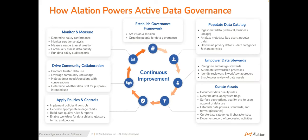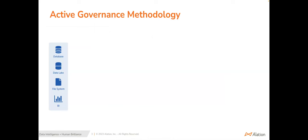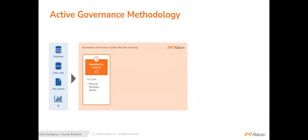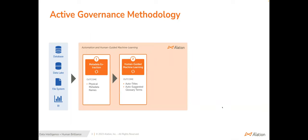So what does this look like applied to a data environment? Your organization likely has a combination of databases, data lakes, file systems, and BI systems. You need a platform that can automatically extract physical metadata from these systems and keep it up to date. Next, you want to apply human-guided machine learning to provide suggestions for things like natural language titles for data objects and suggestions for new glossary terms. The reason I say human guidance is that you know your data and your business — your approval or rejection of suggestions helps the model learn and operate more tuned to your specific organizational needs, which is critical for delivering better value over time.